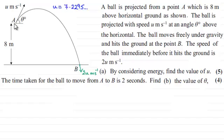We were given this ball which was projected from A at an angle theta to the horizontal, 8 meters above the ground with a speed of u meters per second. And it traveled freely under gravity to B where it had a speed of 2u meters per second just before it hit the ground. And in part A we had to find the value of u, which we found out to be 7.2295 and so on.